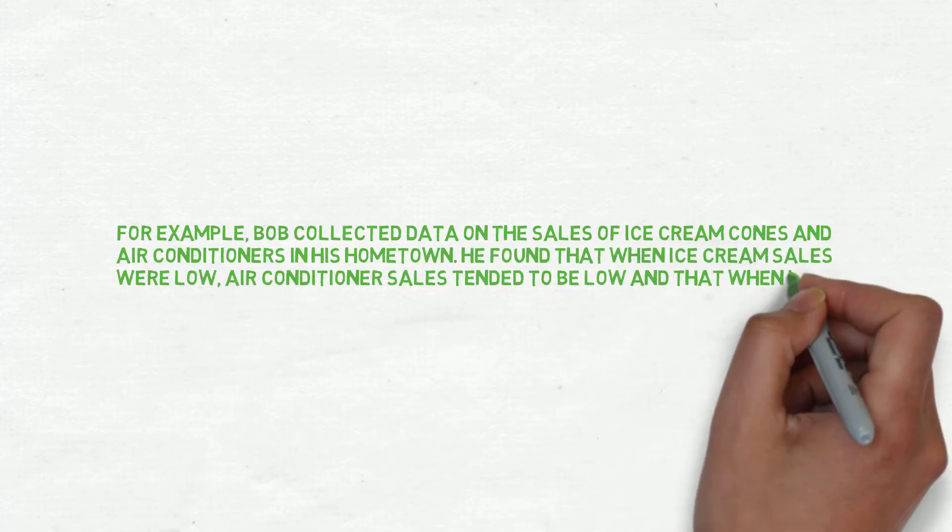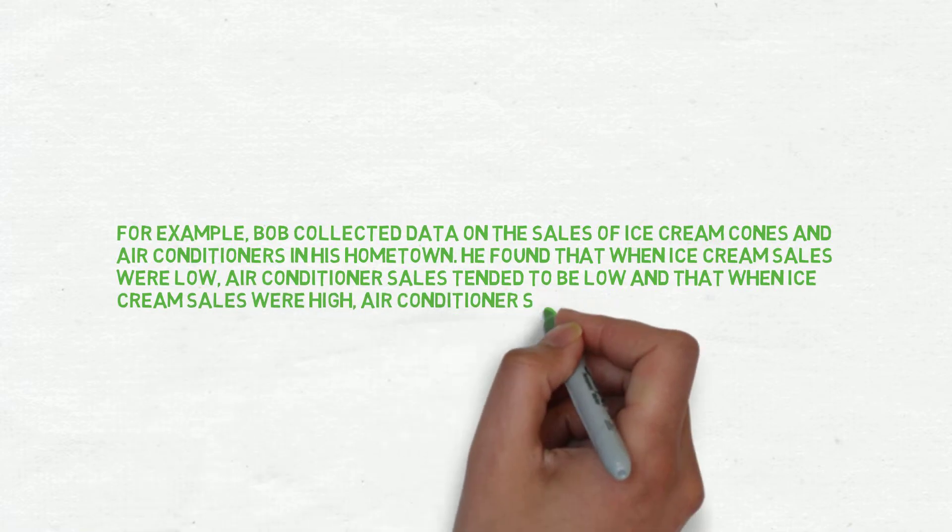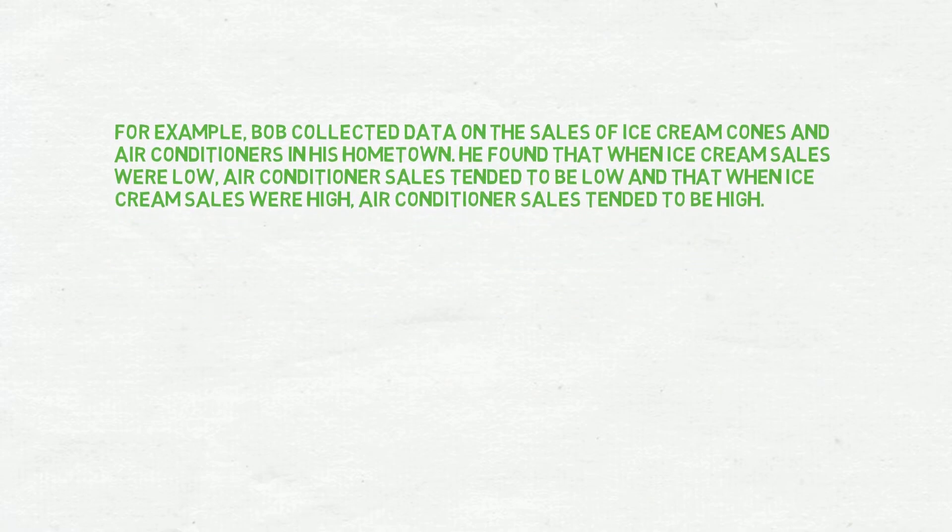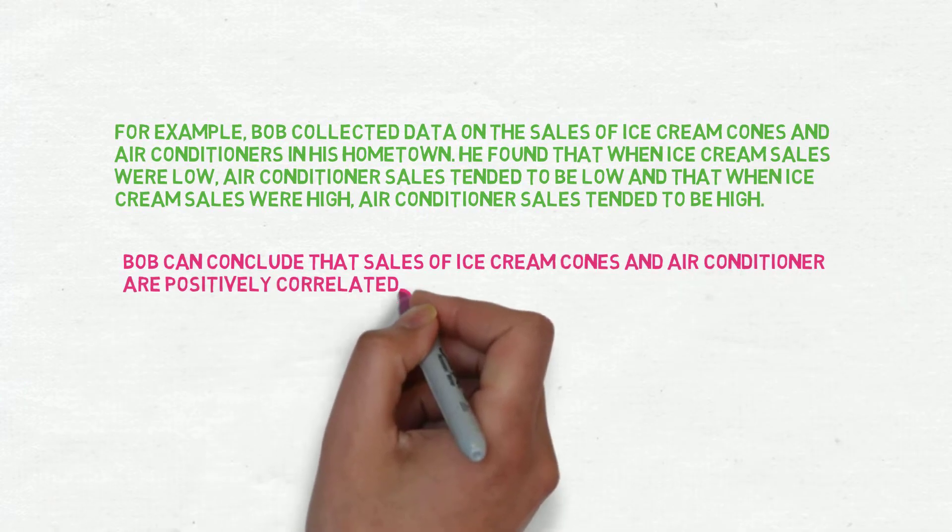air conditioner sales tend to be low, and that when ice cream sales were high, air conditioner sales tend to be high. So now Bob can conclude that sales of ice cream cones and air conditioners are positively correlated.